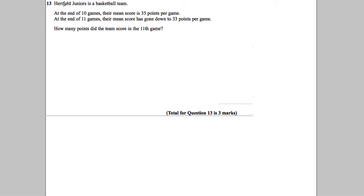Okay, question 13. Hartford Juniors is a basketball team. At the end of 10 games, their mean score was 35 points per game. At the end of 11 games, their mean score had gone down to 33 points per game.